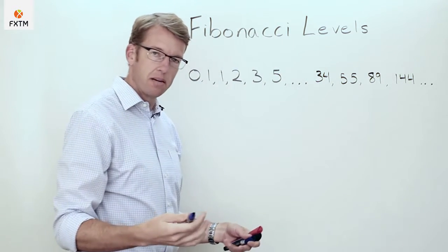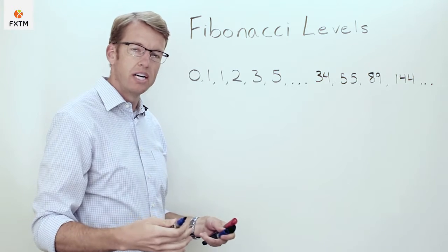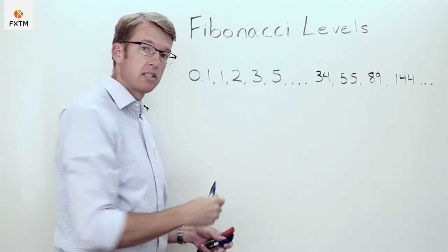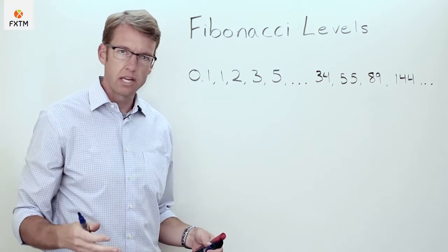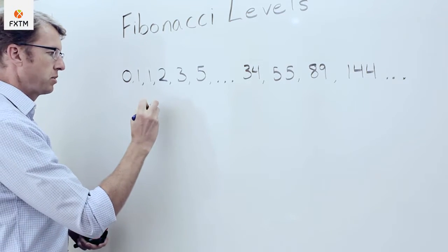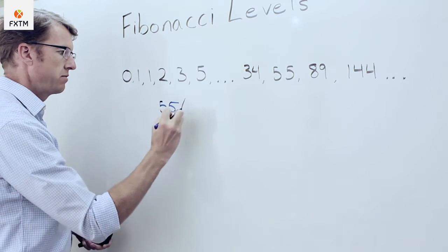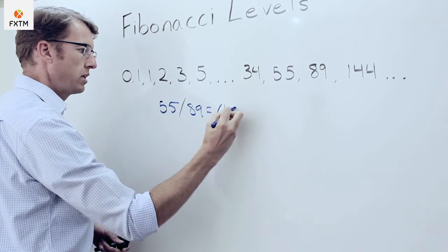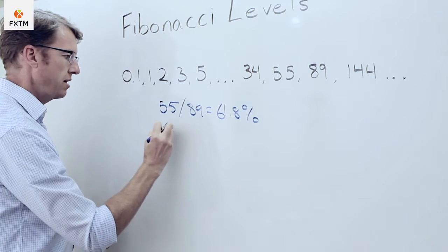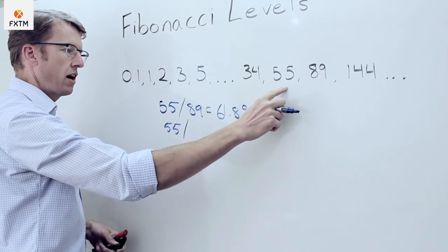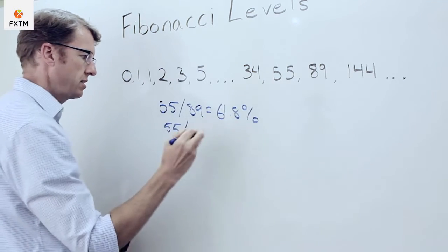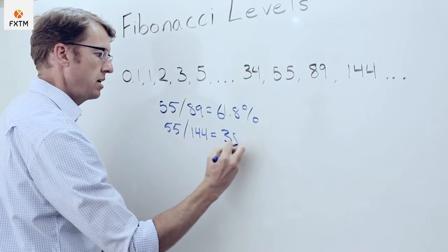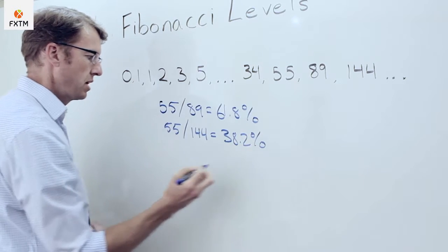As we go higher in the number series, a ratio between numbers separated by one, two, or three units in the series starts to exhibit a very interesting relationship. For example, if we take 55 and divide it by the next number, 89, we get a ratio of 61.8%. If we divide 55 by two numbers ahead, 144, we get 38.2%. And dividing 55 by 233 gives us 23.6%.